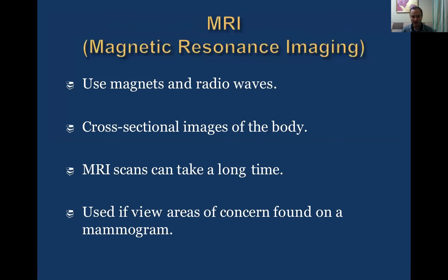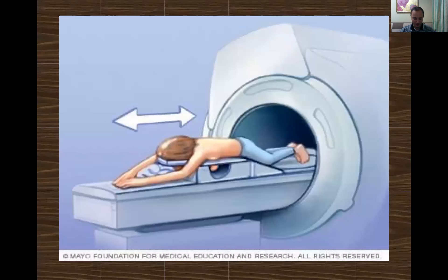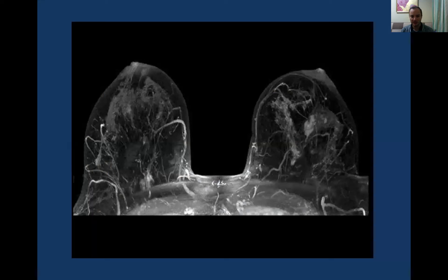Magnetic resonance imaging uses magnets and radio waves to create cross-sectional images of the breast. MRI scans take approximately 25 minutes. It is also used to evaluate areas of concern found on mammograms. The patient lies in the MRI machine with a special magnet coil for breasts. MRI provides the best imaging of the breast — you can clearly see vessels, even with atherosclerosis, ducts, breast tissue, and fat tissue all separately. It is the best choice, I think.